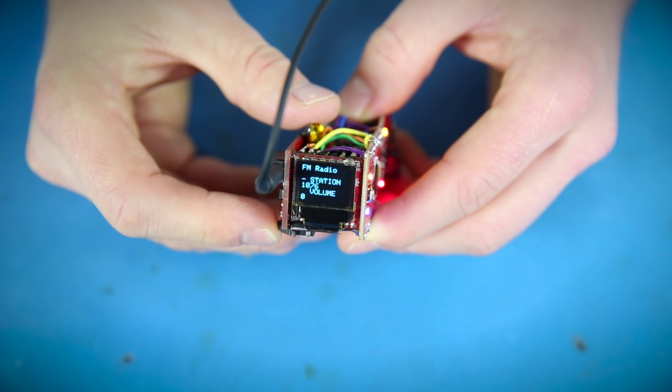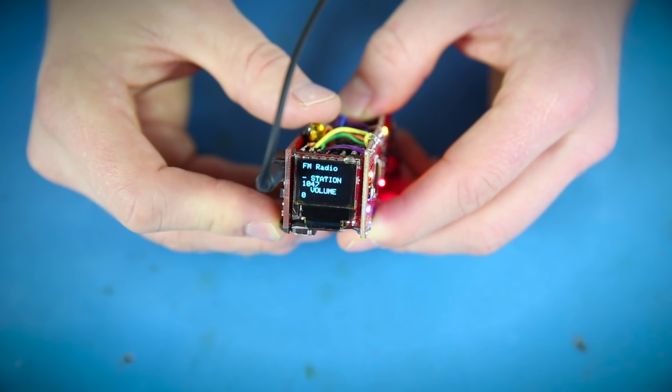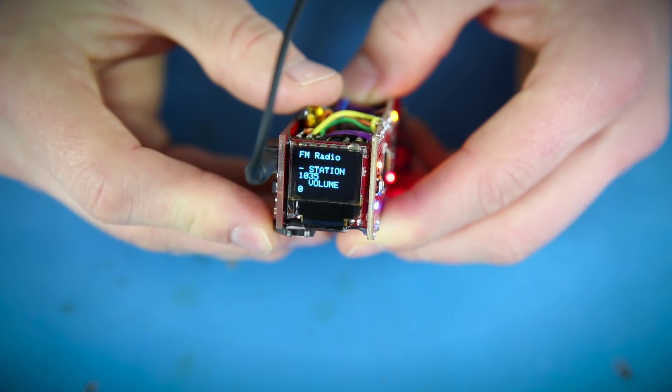Now we just use this little rocker switch up front here. We can adjust our station. In this case, I'm going to tune it to some local Denver station. Let's see here. Oh, 103.5. That sounds good.